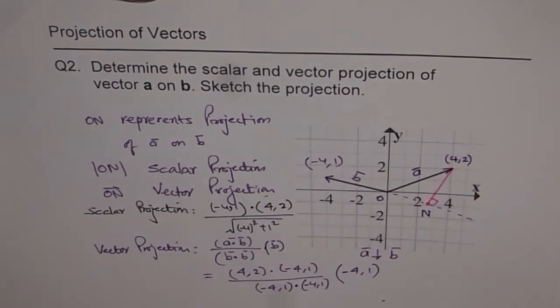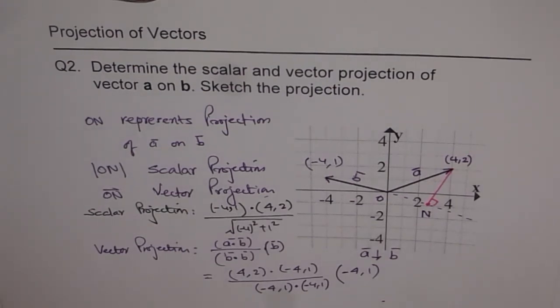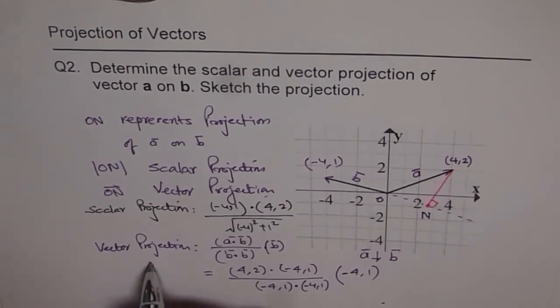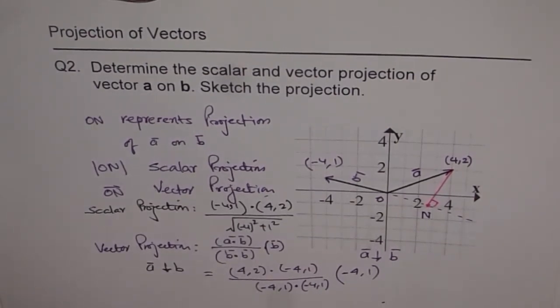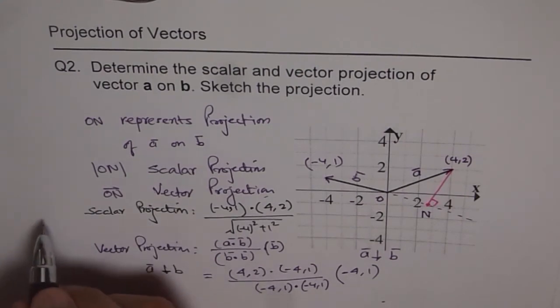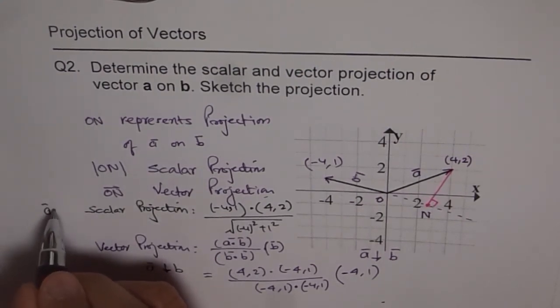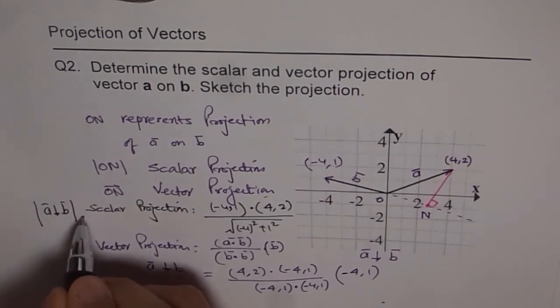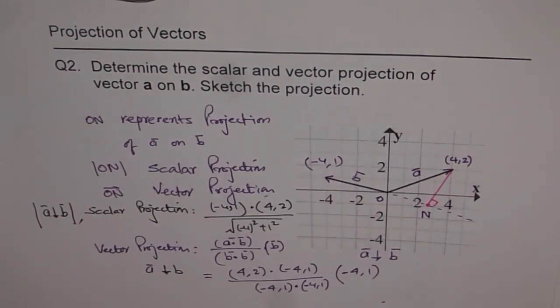So you can do your calculations and come up with the answer. So we will denote vector projection by this symbol and scalar projection by the same symbol with a magnitude. That becomes scalar projection. And that is how this question should be done. Thank you.